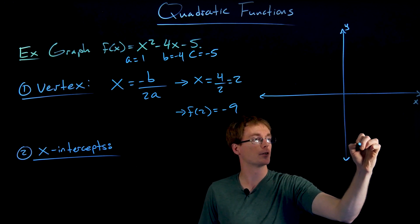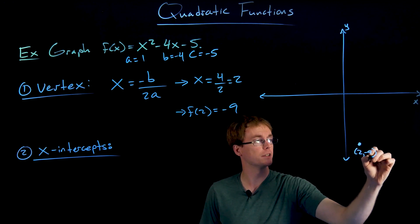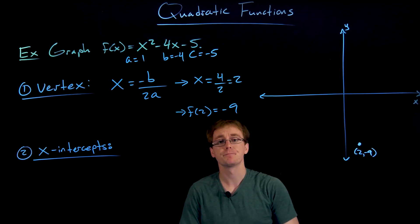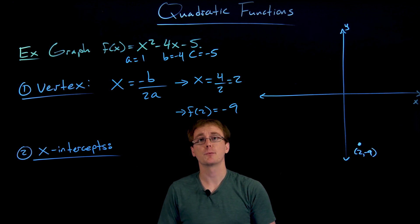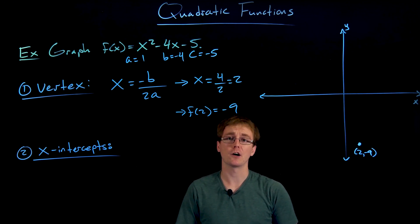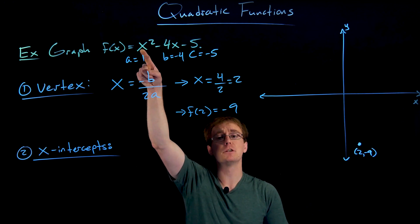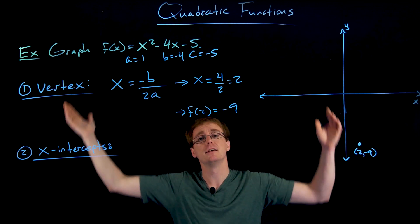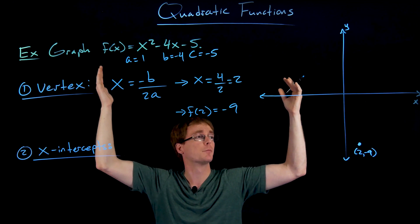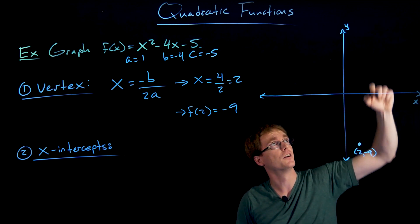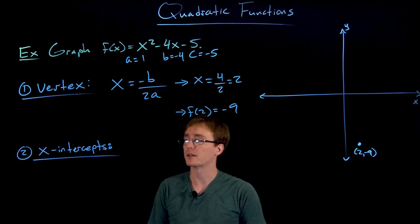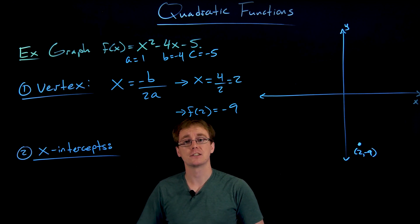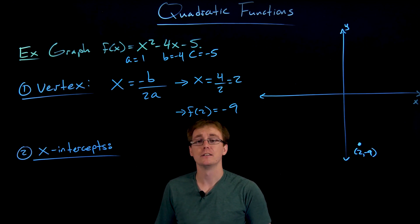Let's go ahead and plot the vertex at (2, -9) — we're not worried too much about detail or scale for the sketch. Since the leading coefficient is positive, this parabola will be concave up — opening upward in a U-shape — meaning the vertex is the minimum point. Now we need to find at least two more points, so let's go ahead and find our x-intercepts as that pair of symmetric points.